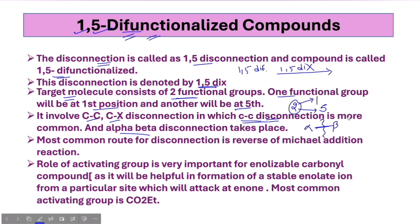The alpha-carbon and beta-carbon bond will break here. Moving to the next point: the most common route for this disconnection is the reverse of Michael addition. If we reverse the Michael addition reaction, that gives us the disconnection route for a 1,5-difunctionalized compound.